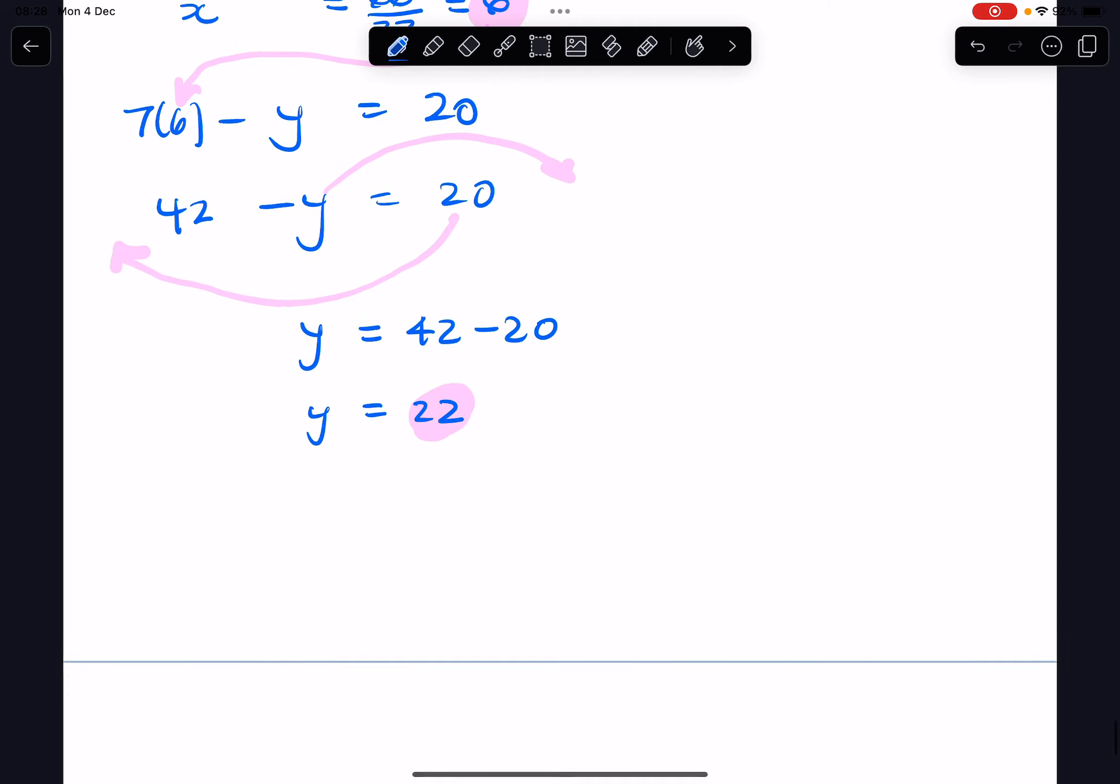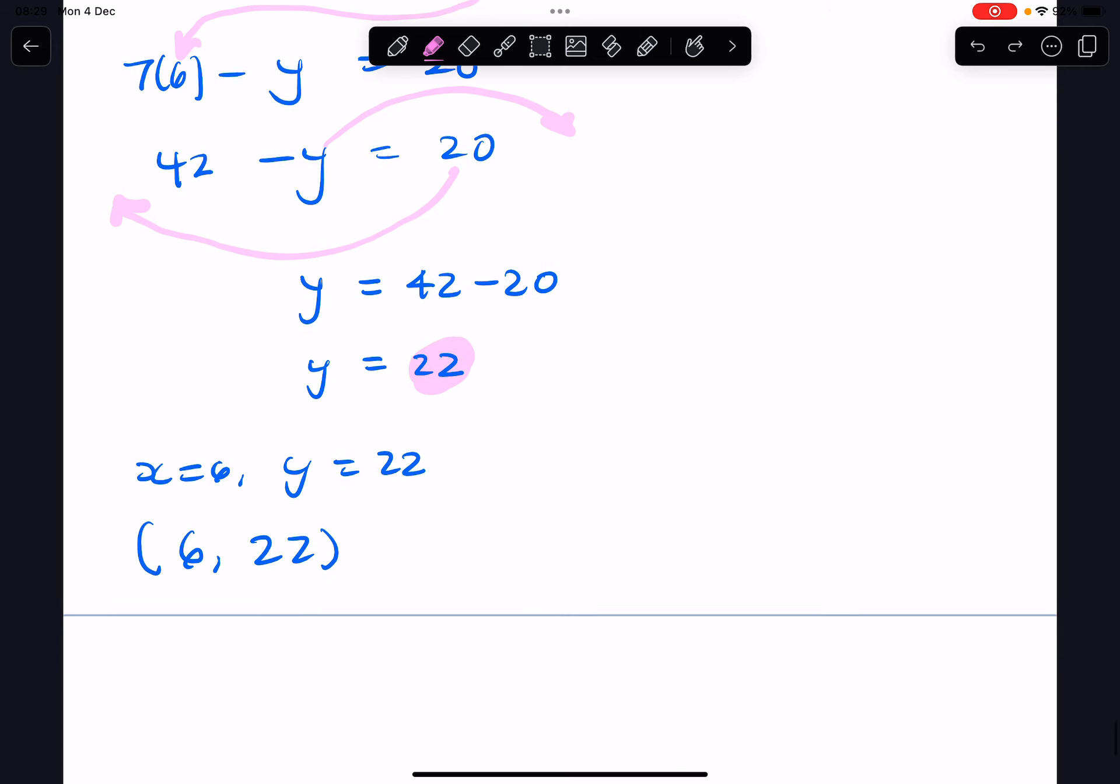We can say x equals 6, y equals 22, or you can write it as a pair like this. So that's the solution to these two simultaneous equations using the method called elimination.